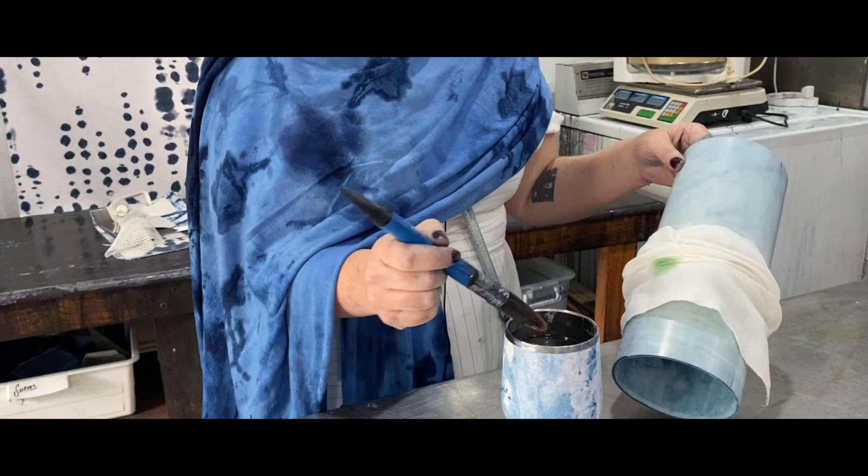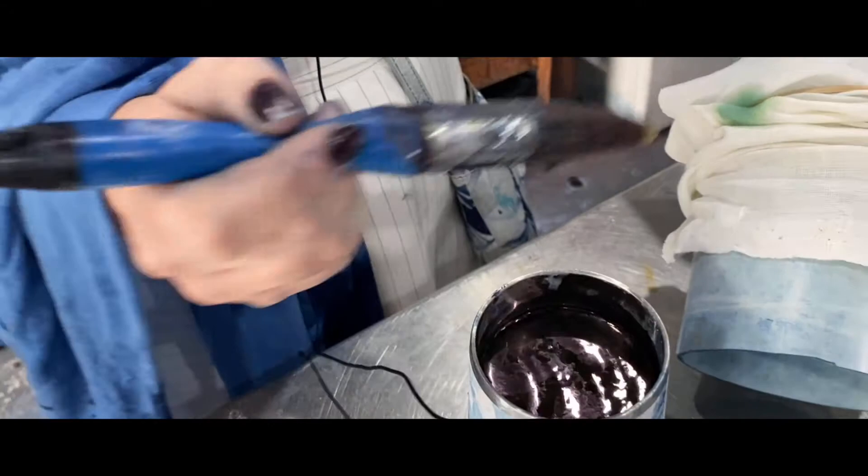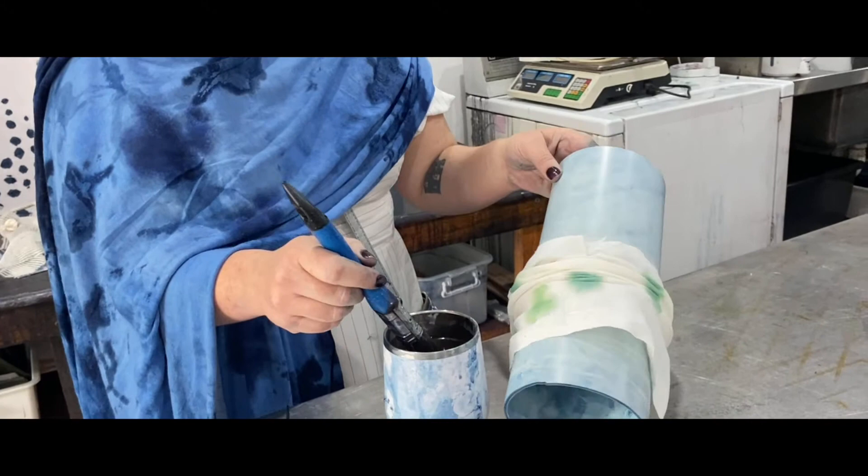You can see that the indigo is green because in order for the dye to stay on the fiber with indigo, we need it to have an oxidization process, and that will occur as the air hits it. So you can actually see that it's changing.